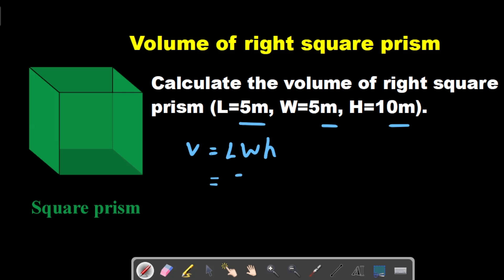So let me write here 5 times 5 times 10. So if I multiply this, 5 times 5 is 25 and 25 times 10 is 250.